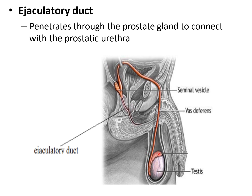This is the epididymis and this is its tail. From the tail, a muscular tube originates — that is the vas deferens. The vas deferens continues and enters the prostatic urethra after getting connected with the seminal vesicle.